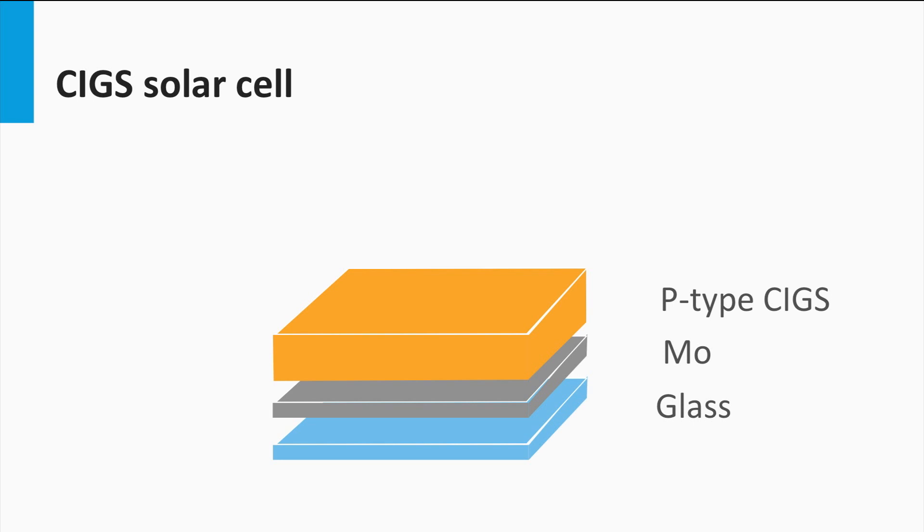On that the p-type CIGS absorber layer is deposited with thickness ranging from 2 to 4 microns. The p-n junction is formed by a thin n-layer of around 50 nm on top of the p-type CIGS that is based on cadmium sulfide. This layer is referred to as the buffer layer.